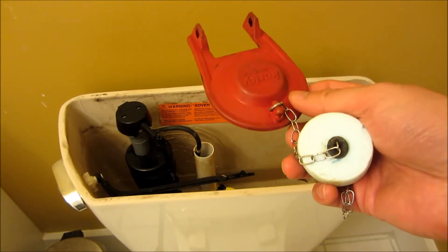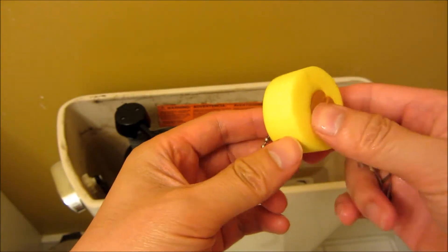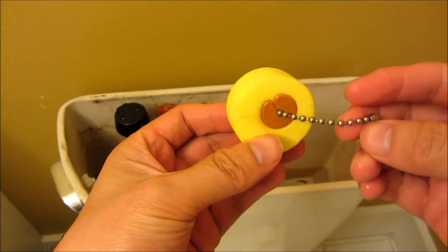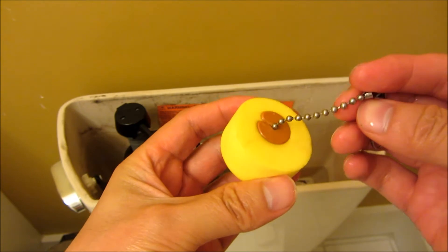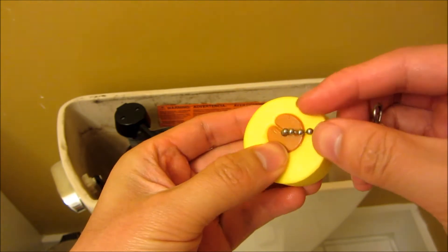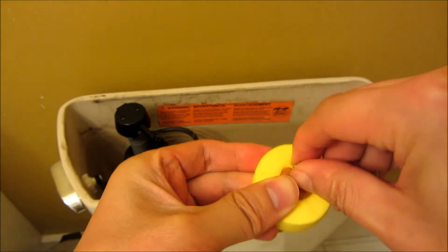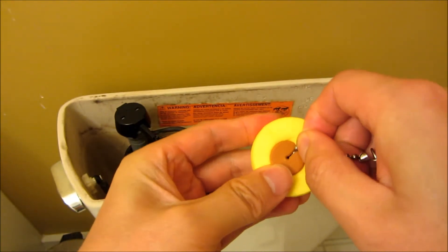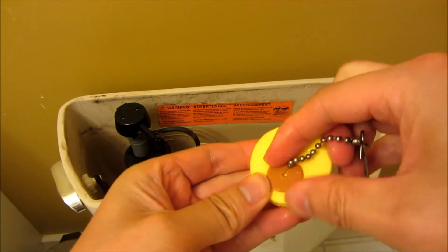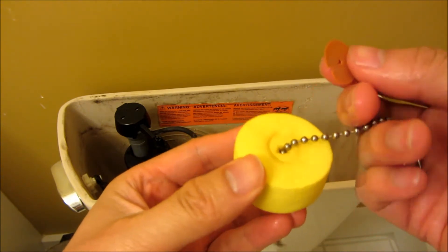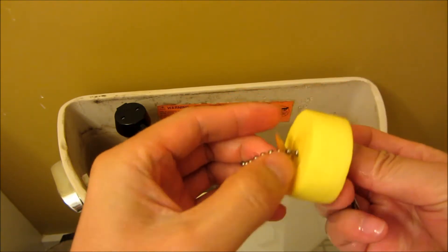So I briefly did want to show you another style of float. So for example, if you have this chain type float and it is locked in by basically a plastic washer, the way to adjust it, and this is less convenient than the rubber washer, is to actually remove these.